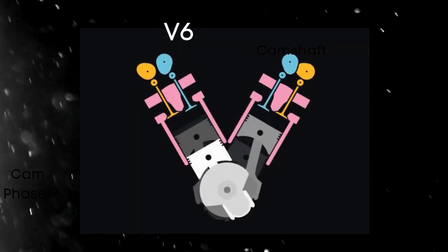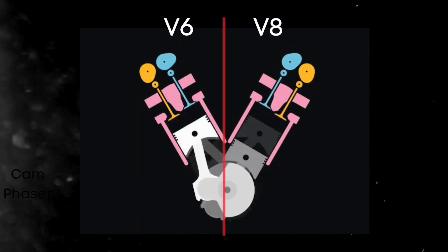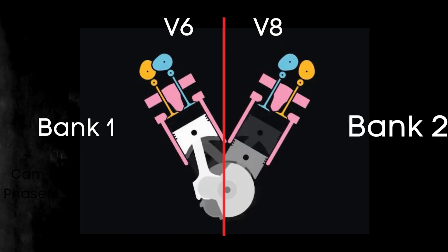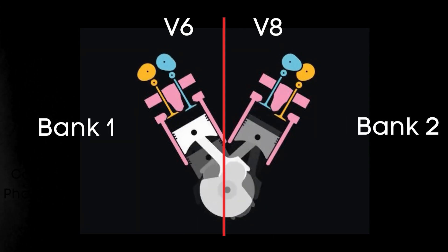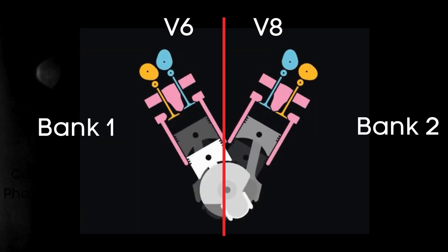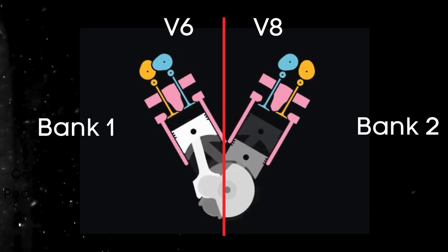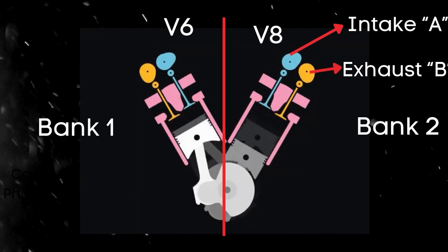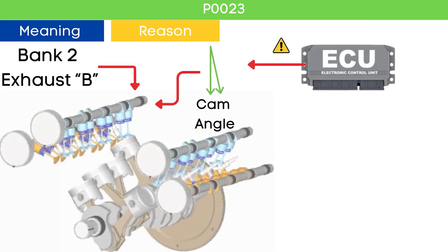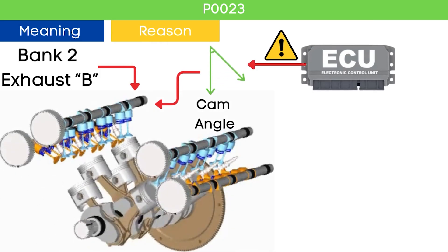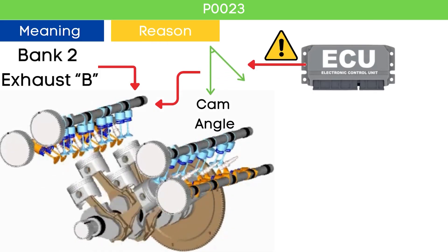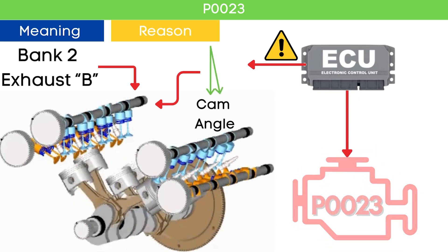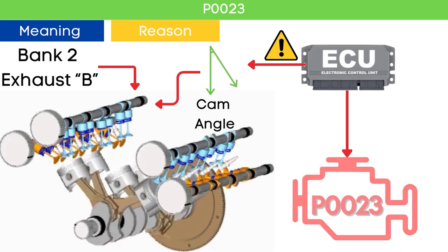In the case of V6 or V8 engines, there are two camshafts: bank 1 and bank 2. For dual overhead camshaft, DOHC, engines, there are two camshafts per bank — intake and exhaust. When the ECU detects that the bank 2 exhaust camshaft position is not reaching the targeted cam angle, it triggers OBD-2 code P1023.